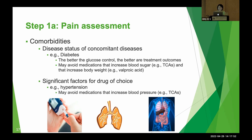Better glucose control can lead to better treatment outcomes for neuropathic pain. If the patient has diabetes, I usually avoid TCAs because they can increase carbohydrate intake, and I would also avoid valproic acid because it can cause weight gain. If the patient has hypertension, I would avoid medications that could interfere with blood pressure.